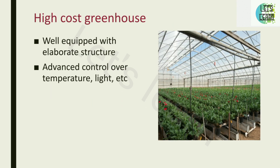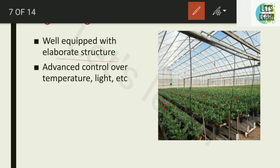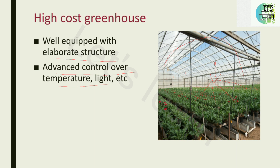The high-cost greenhouse is well-equipped with an elaborate structure. It is constructed with glass, which is high cost, and it has advanced control over temperature, light, etc. A thermostat is used, and if there is excess heat inside, a sprinkler is present to sprinkle water on the plants to reduce the temperature. This type of elaborate structure is called a high-cost greenhouse.